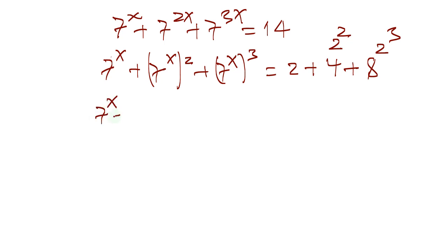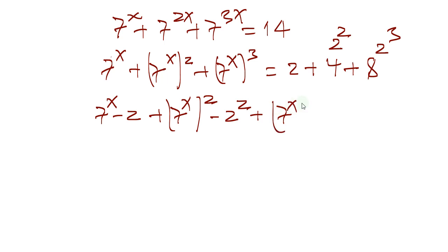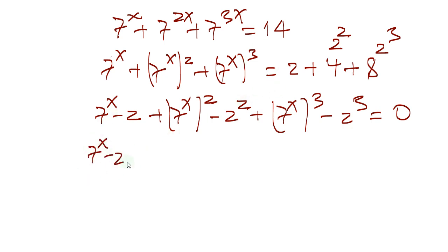So I'm going to bring these terms to the other side of the equation. This gives us: 7 to the x minus 2, plus 7 to the x squared minus 4 (which is 2 to the power of 2), plus 7 to the x cubed minus 8 (which is 2 to the power of 3). This way we have negative 2, negative 4, negative 8, which is negative 14 on this side.